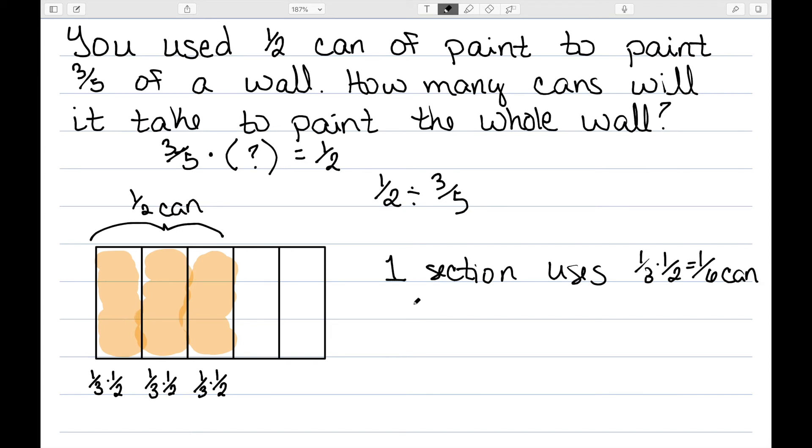So we know we have 5 total groups. Each one of those groups is going to use 1 sixth of a can. So total we get 5 over 1 times 1 over 6, which is 5 over 6.